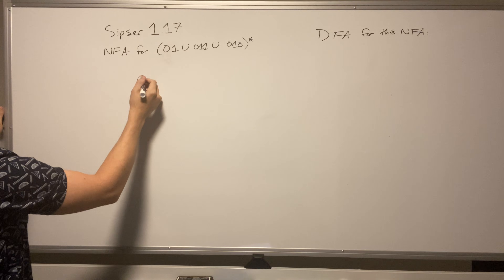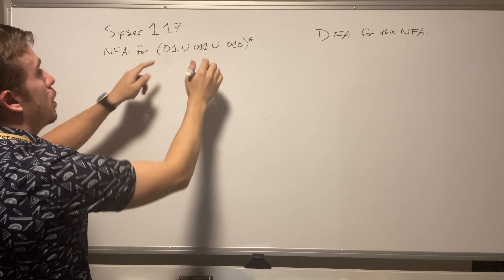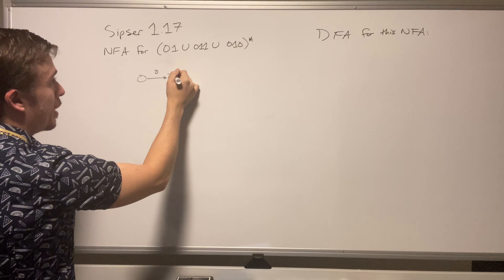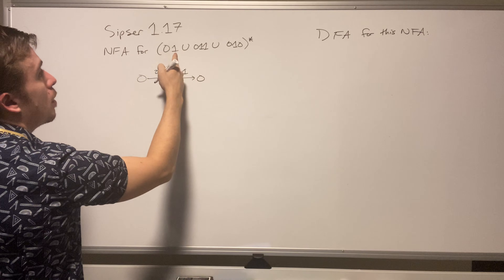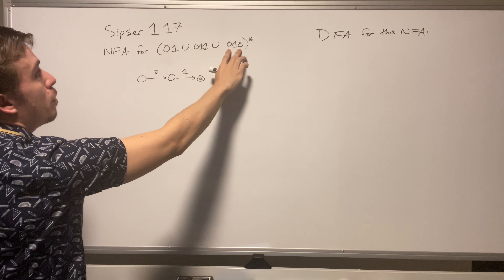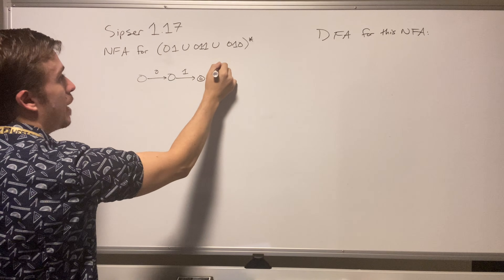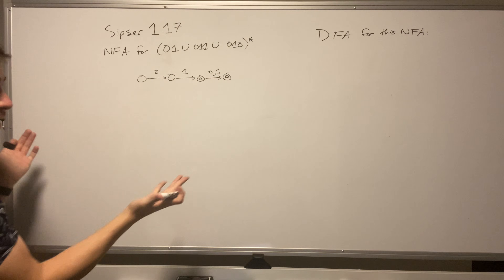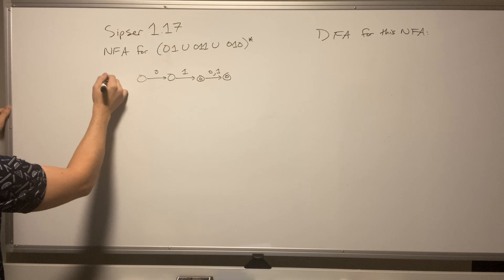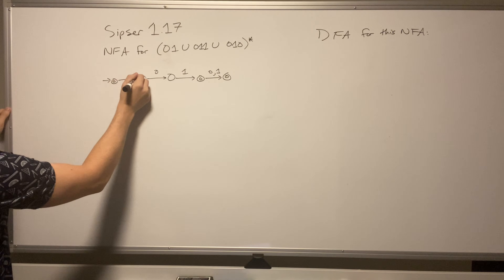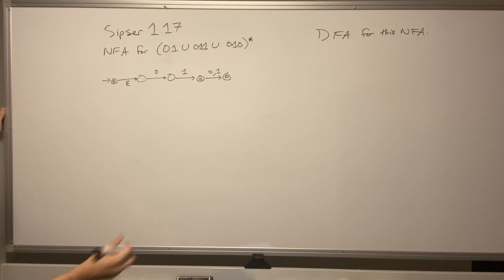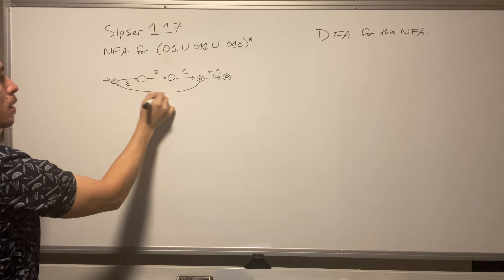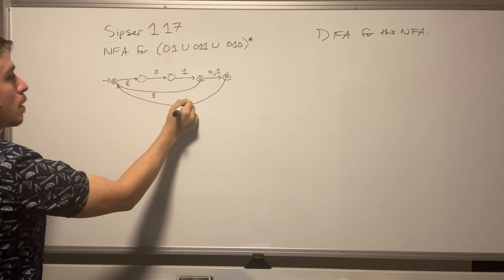I'm going to merge them together. Notice that all three parts start with a zero, so I'll have a zero transition, and then all of them have a one as the next character. From there we could either stop, or we could read a zero or a one after that — this state takes care of those two cases, effectively unioning them all together. To do the star, we need a start state that is an accept state, which epsilons into the original start state, and all other accepting states need to go back on epsilon transitions.